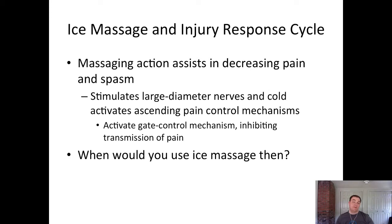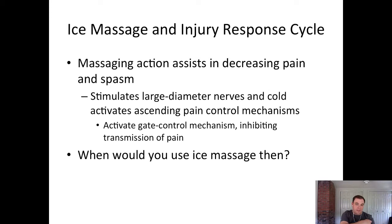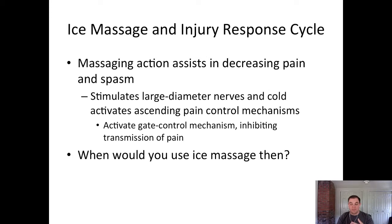The massaging action assists in decreasing pain and reducing spasm by stimulating large-diameter nerve fibers, activating the ascending pain control mechanism — specifically the gate control mechanism. This stimulates A-beta fibers, overriding the pain signal going to the substantia gelatinosa in the dorsal horn of the spinal cord. Ask yourself: which afferent nerves are being stimulated, and how does stimulating them override the pain signal? This is the physiological basis of ice massage's effectiveness.